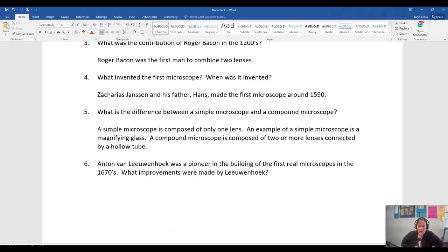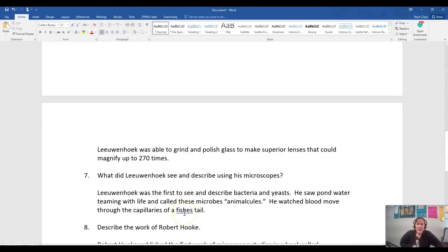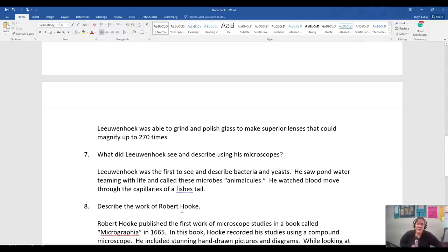Anton von Leeuwenhoek was a pioneer in the building of the first real microscopes in the 1670s. He was able to grind and polish the glass to make much superior lenses that could magnify up to 270 times life size. To put that into perspective, the scopes in our lab can magnify up to a thousand times life size, so 270 times is pretty amazing for that time period.